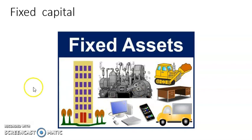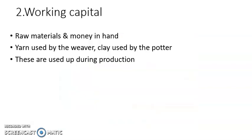The next important type of capital is known as working capital, which is also included in physical capital. Working capital means raw materials and money in hand. Raw materials are necessary for production, and money is also very important because it is required at different stages of production. So, raw materials and money are known as working capital.